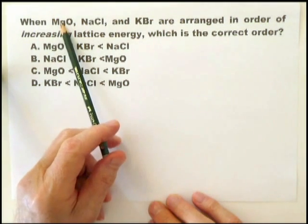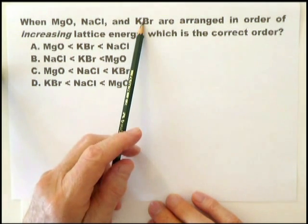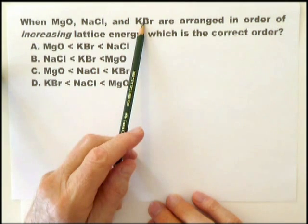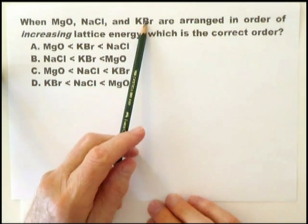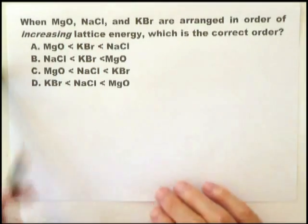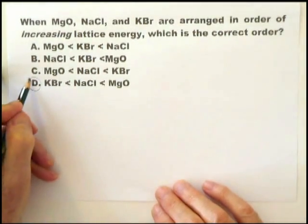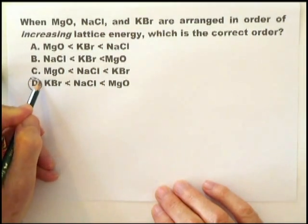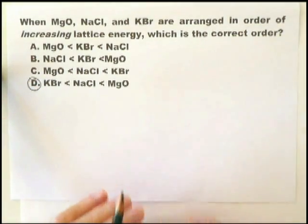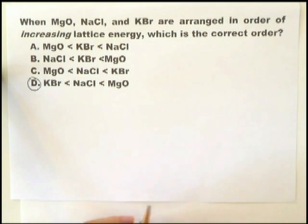Therefore, the order is that magnesium oxide has the highest lattice energy and potassium bromide has the lowest lattice energy. You go down here and you'll find it's here. So the first thing to do is to take into account ionic charge and then take into account ionic radius.